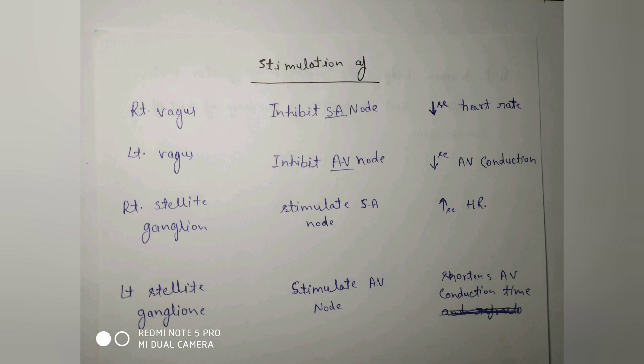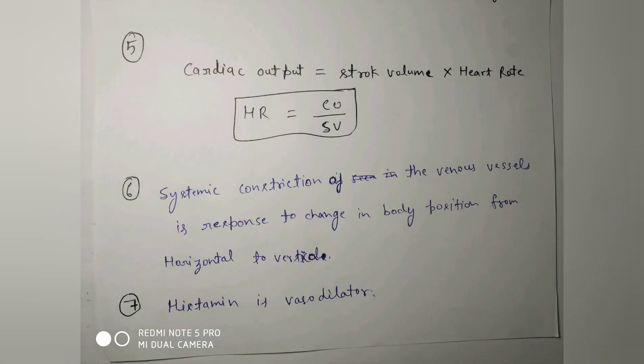Stimulation of the right vagus and left vagus inhibits the SA node and AV node, meaning decreased heart rate and decreased AV conduction. The right and left stellate ganglia stimulate the SA node and AV node, meaning increased heart rate and shortened AV conduction time.